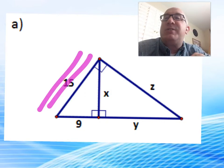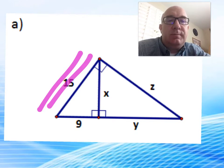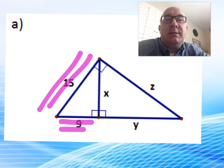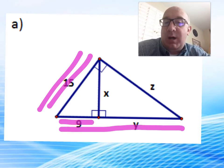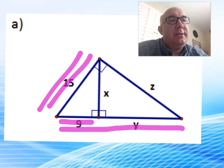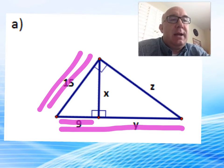We would know that 15 squared would equal 9 times 9 plus y. That's one of the geometric means. Let's clear that out.